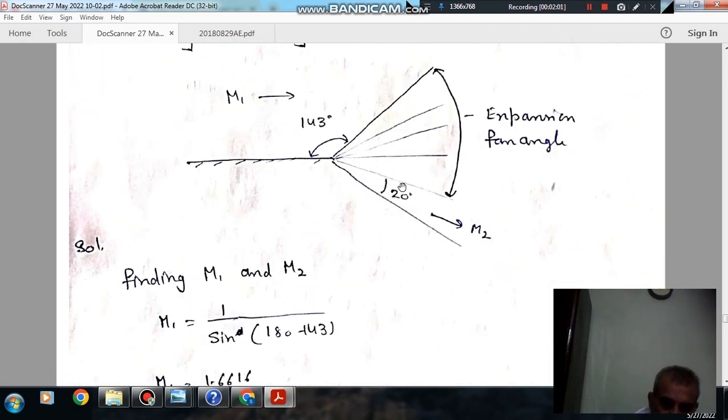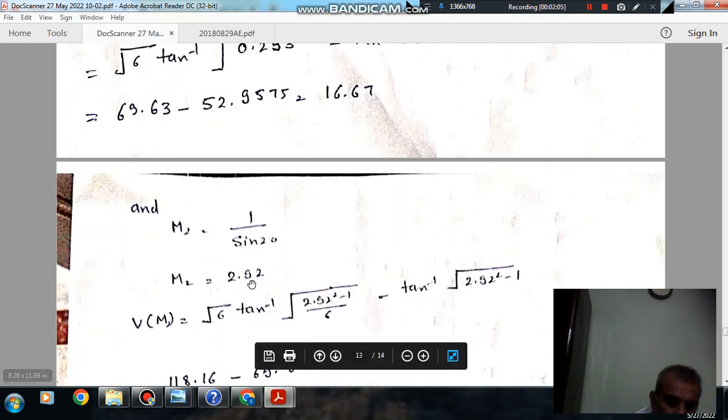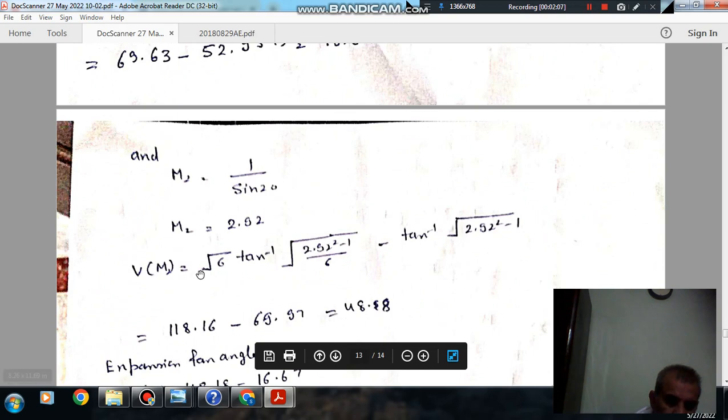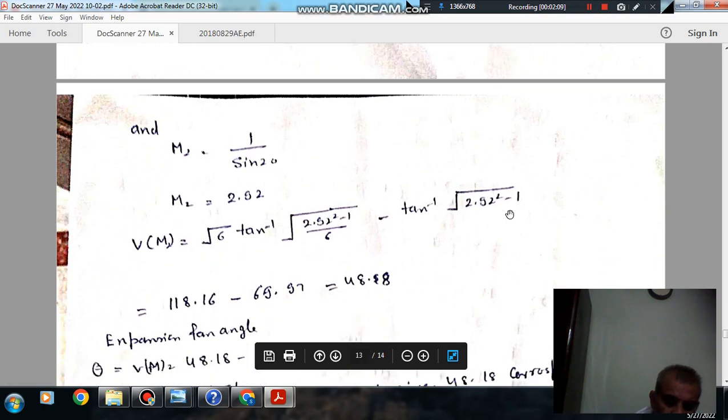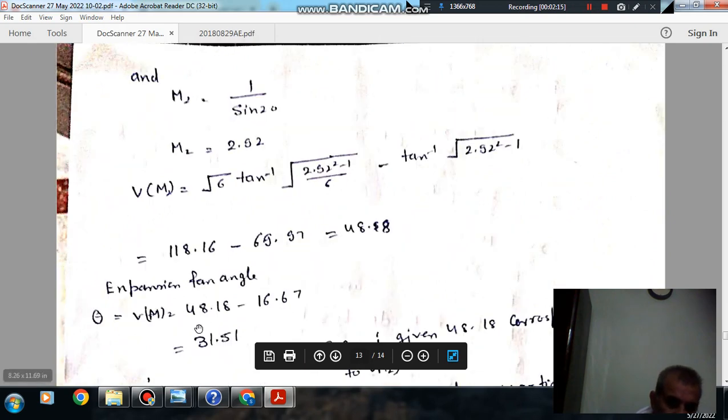Similarly we can find the angle with M2. M2 is 2.92. Putting the value in the expression of v(M), so v(M2) is 48.18. So the expansion angle is 48.18 minus 16.67, that is 31.51.